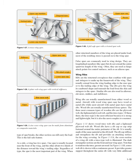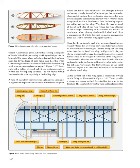Wood ribs have a rib cap or cap strip fastened around the entire perimeter of the rib, usually made of the same material as the rib itself. The rib cap stiffens and strengthens the rib and provides an attaching surface for the wing covering. To reinforce the truss, gussets are used. A truss web rib with a continuous gusset provides greater support throughout the entire rib with very little additional weight. A continuous gusset stiffens the cap strip in the plane of the rib, aiding in preventing buckling and helping to obtain better rib/skin joints where nail-gluing is used. Such a rib can resist the driving force of nails better than other types. A rib with a lightened plywood web also contains gussets to support the web/cap strip interface, and the cap strip is usually laminated to the web, especially at the leading edge.